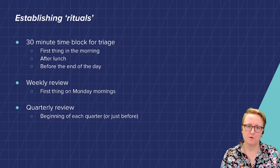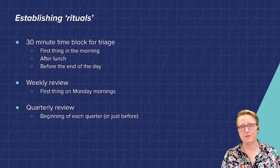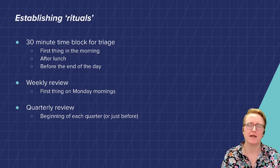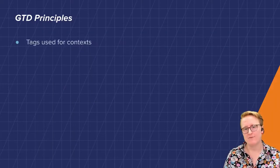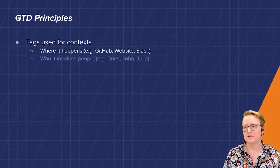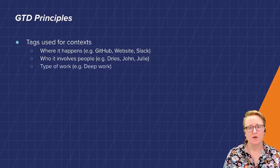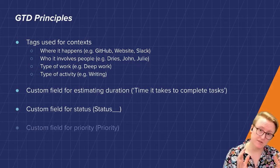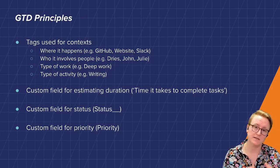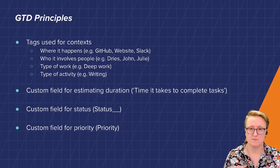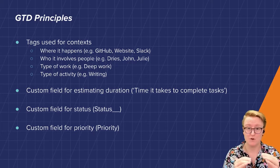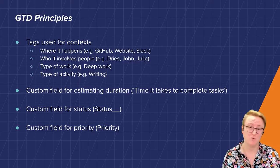For me, the GTD principles are what has been most helpful. I don't follow them really strictly, but some of them have been really helpful for me to quickly get to the bottom of what needs to be done next, or what do I need to do when I'm in this place. So I use tags really heavily for context in Asana — where it happens, like GitHub, website, Slack; who it involves — the people I need to talk to about this thing; and the kind of work. So for me, deep work means you need to chunk some time out in your calendar to do these things because it's hard to concentrate if you're being disrupted.